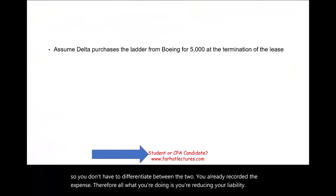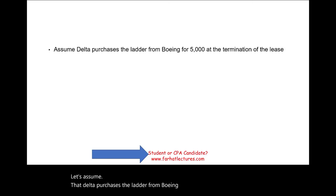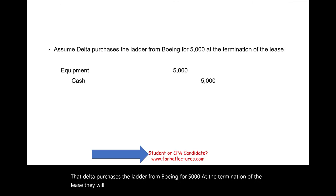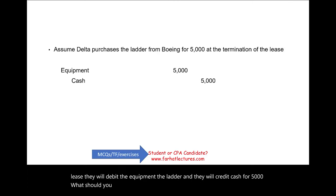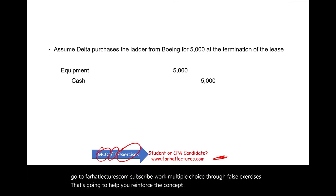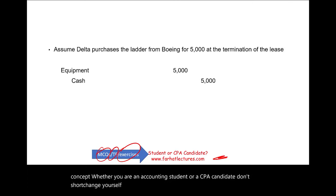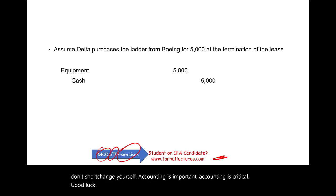If Delta purchases the ladder from Boeing for five thousand at the termination of the lease, it will debit equipment and credit cash for five thousand. Go to farhatlectures.com, subscribe, and work multiple-choice and true/false exercises to reinforce the concept of leases — a very important topic whether you are an accounting student or a CPA candidate. Good luck, study hard, and stay safe.